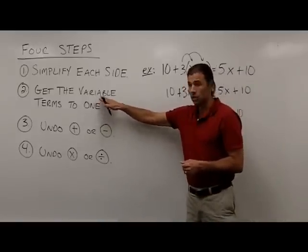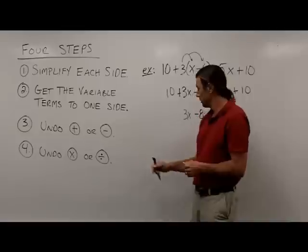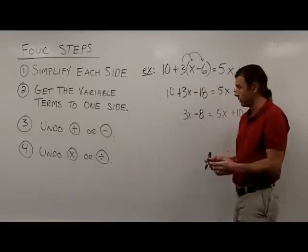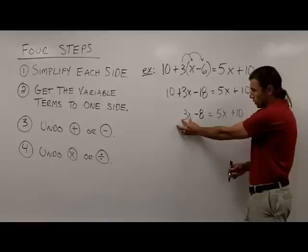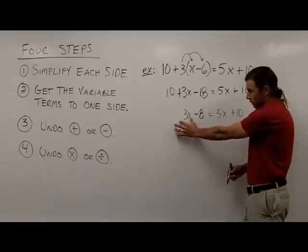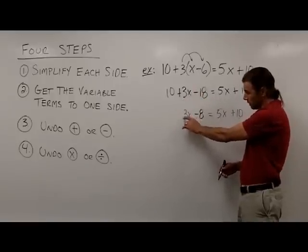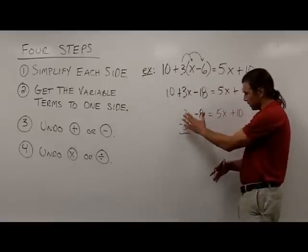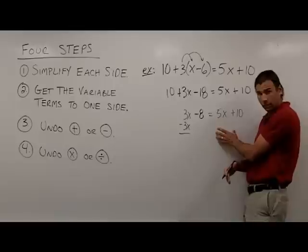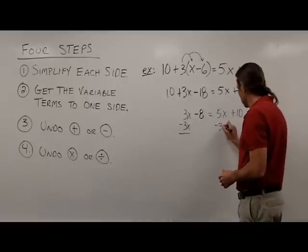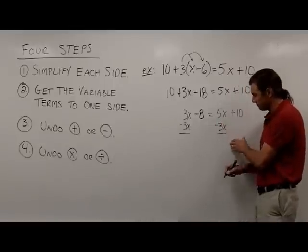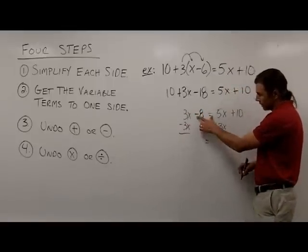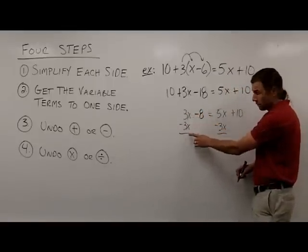Now it's time to move on to step 2, which is to get the variable terms to one side. As I've mentioned before, it's easier to move the smaller variable. So I'm going to remove the smaller one — this 3x — from the left side. To get rid of it on the left side, I'm going to subtract 3x. Whatever I do to one side of the equation, I do the same thing to the other side. So I'm going to subtract 3x from the right side as well. On the left side, 3x minus 3x is 0, so I just have the negative 8 left over.